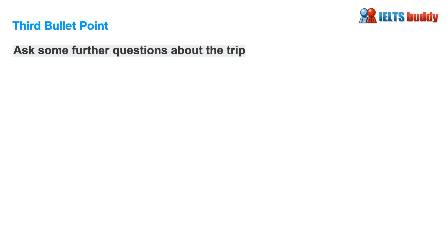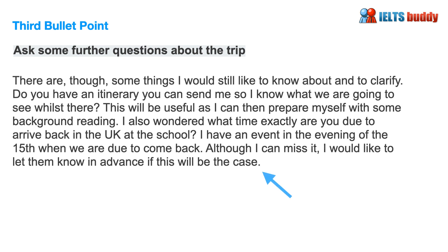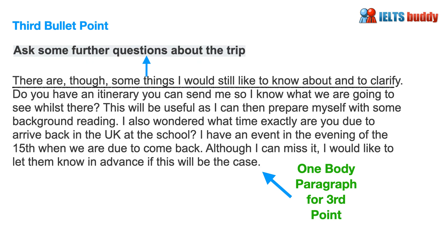The third bullet point asks you to raise some further questions about the trip, so there's another body paragraph for this. Again there's a topic sentence relating specifically to this point, with further explanation given. Questions include: do you have an itinerary about where they're going and what they're going to see, and what time exactly are they due to be back in the UK. Note again that these ideas are expanded — with the itinerary they've explained why they want it, and regarding the time, the person has explained they have an event in the evening when they're due back and don't want to miss it.